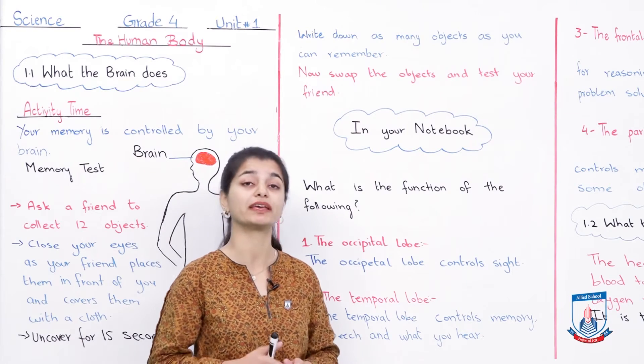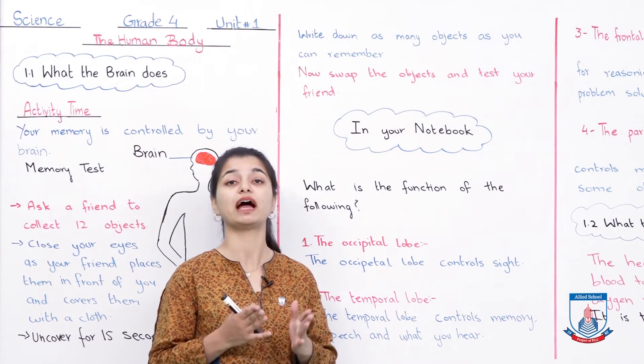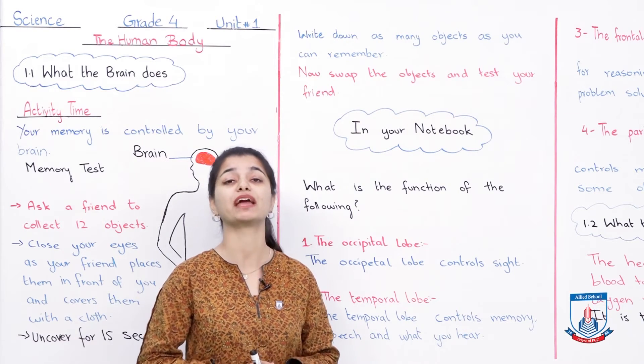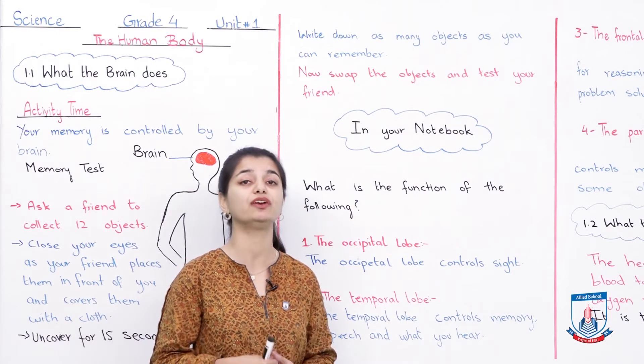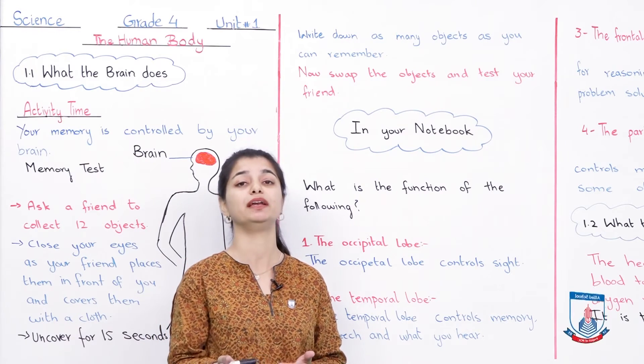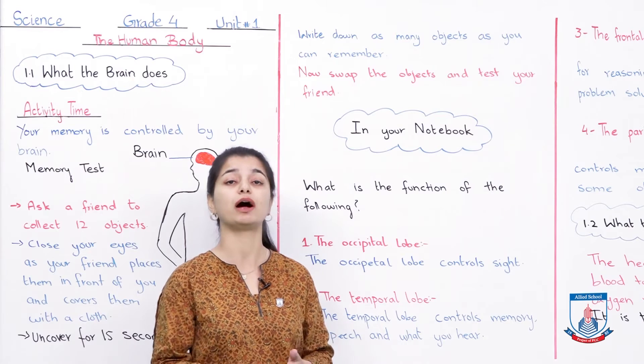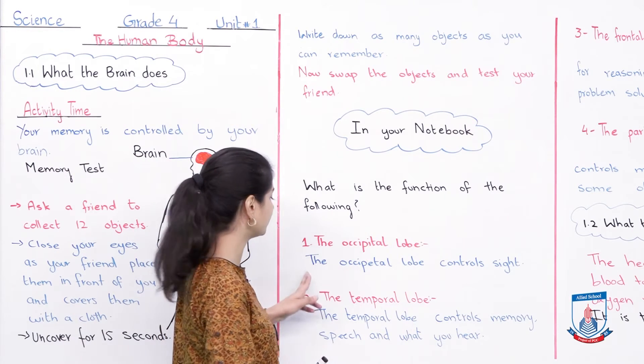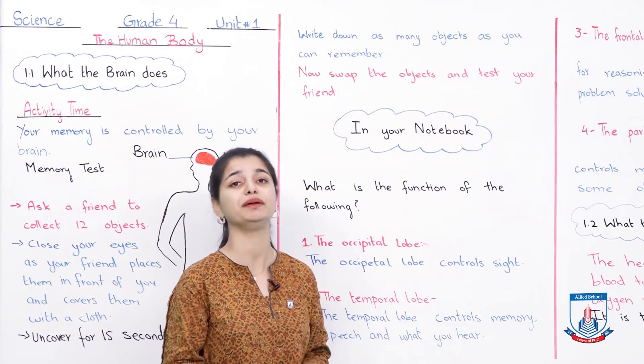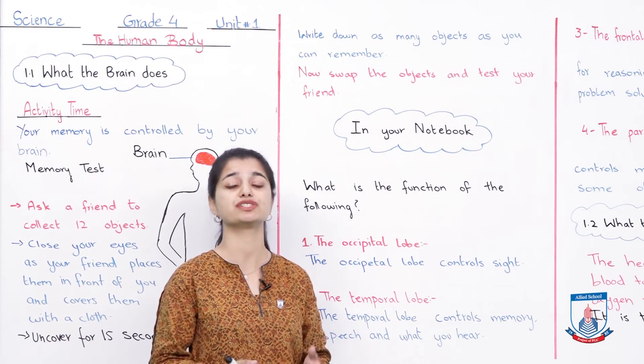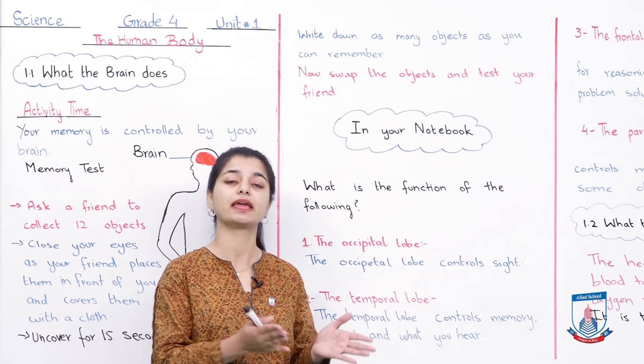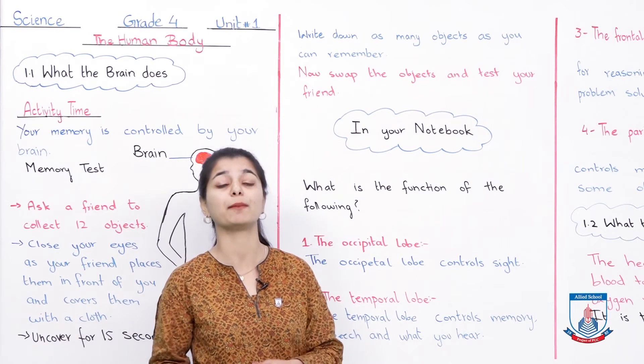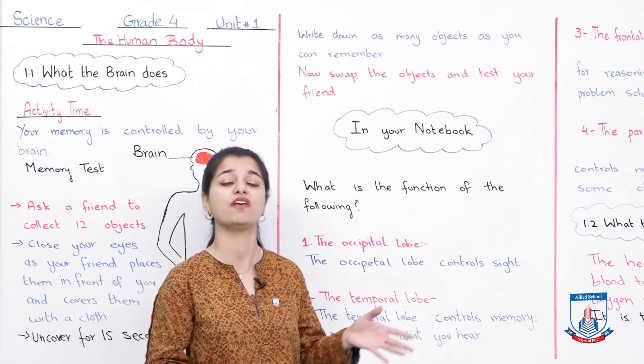First, what is the occipital lobe function? I remember, you also remember. The occipital lobe controls sight. The ability of your eyes is controlled by the occipital lobe. You can simply write: the occipital lobe controls sight.